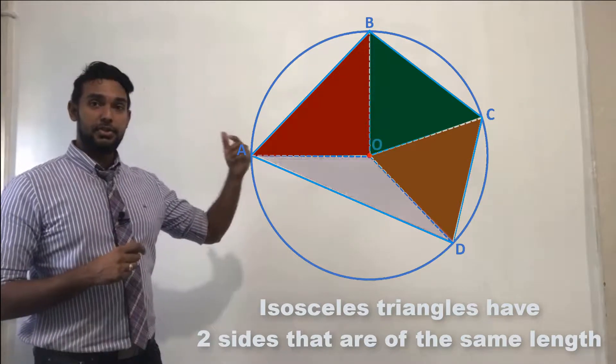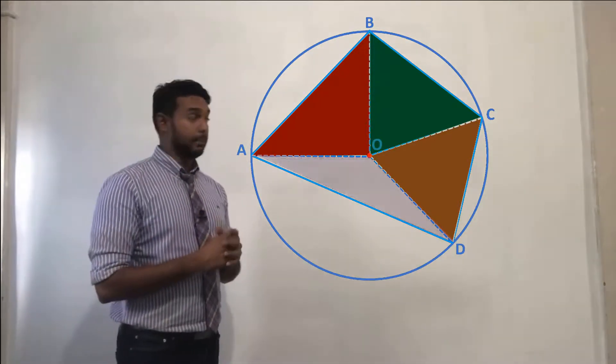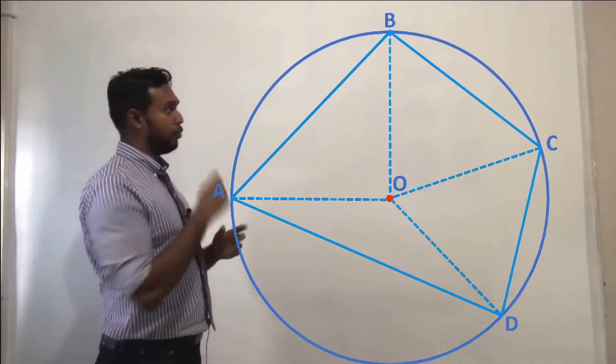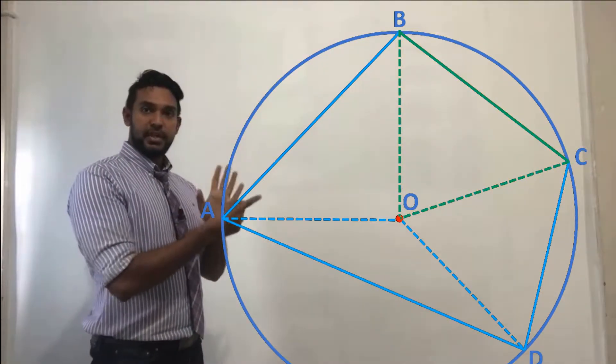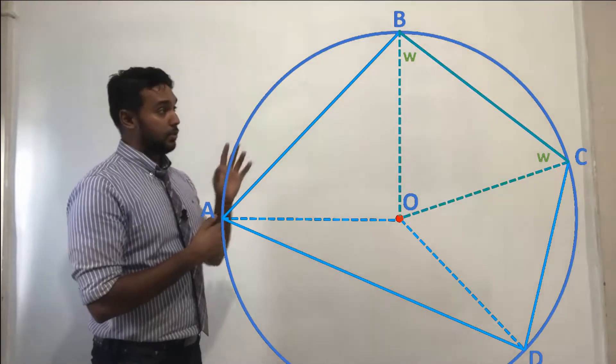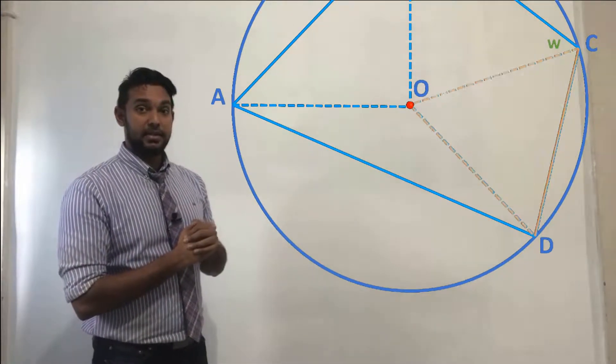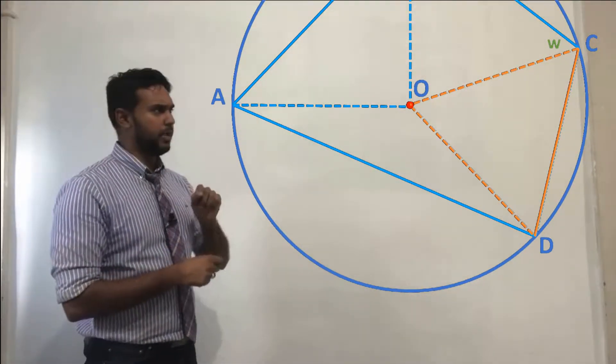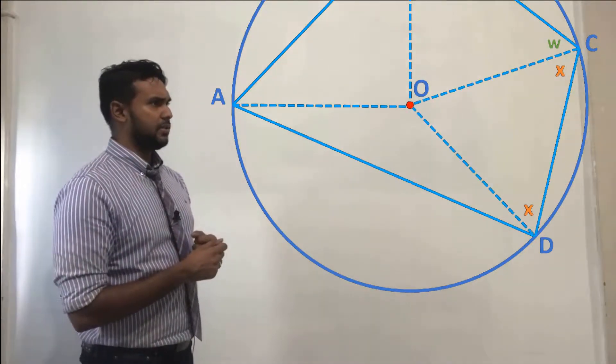Okay. Now, let's consider each of these triangles one at a time. So let's start with the first one on top, O, B, C. Now, not only are two sides equal, but two angles are equal. So we're going to call those angles W. Now, let's go across to the next triangle on the right-hand side there. We're going to call those angles there X.